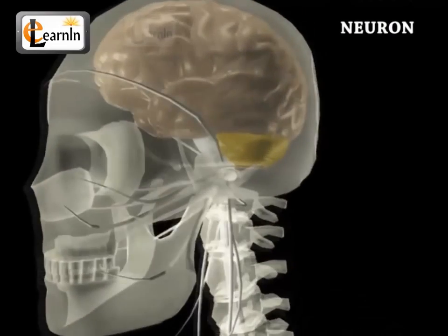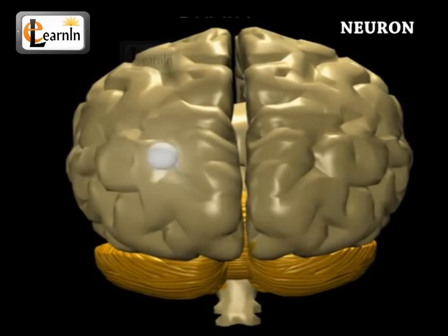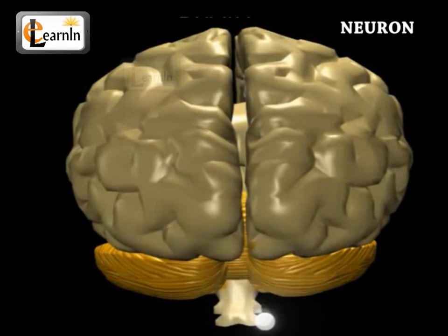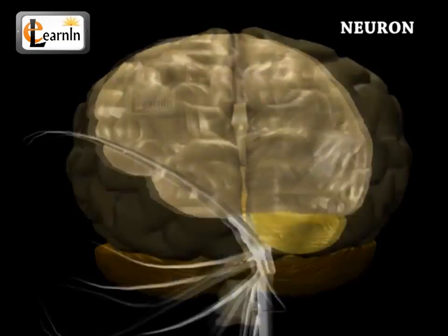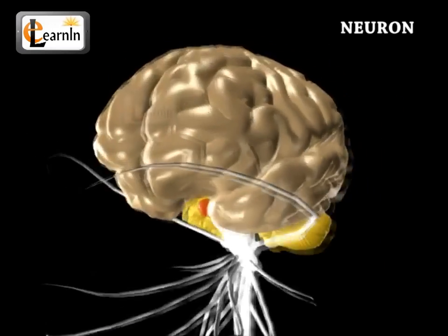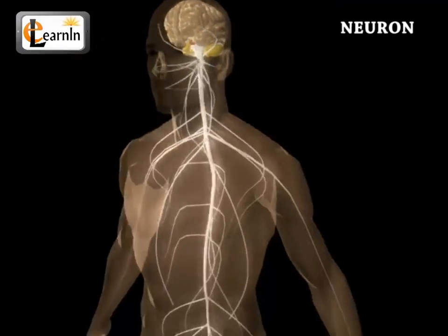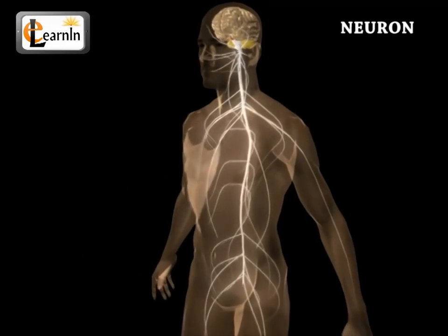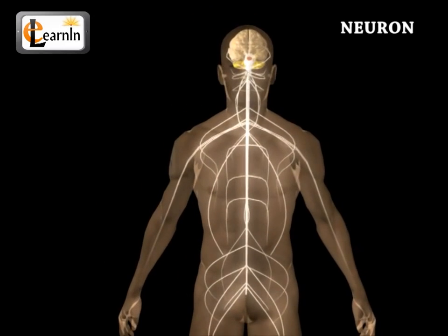The nervous system is an essential part of the human body that helps the transmission of signals across the various parts of the body. It releases messages back and forth from the brain to the different parts of the body, and also helps in the coordination of voluntary and involuntary actions of the body.